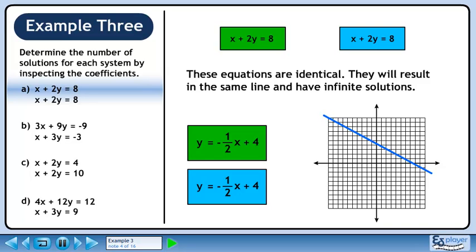Both equations become y equals minus 1 over 2x plus 4, and the graphs lie directly on top of each other. As we learned in the previous example, when two graphs lie directly on top of each other, they have infinite solutions.